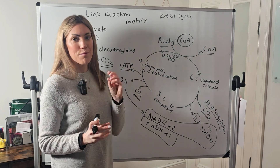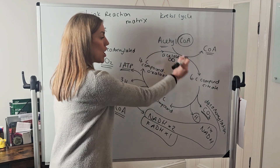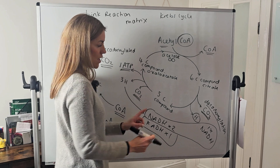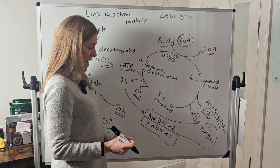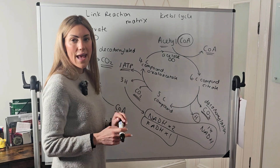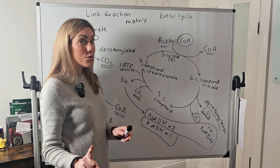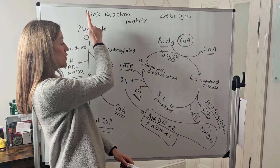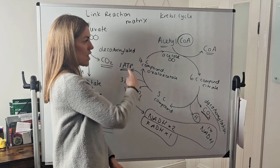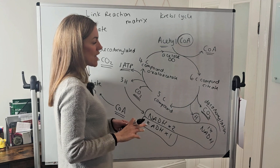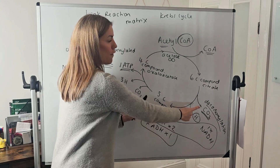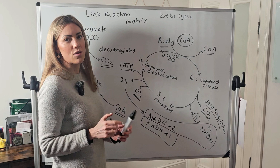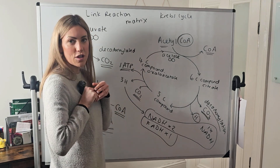Let's think about the products, because this is what's important. Per cycle you get two carbon dioxides, three NADH, one FADH, and one ATP. Per glucose you have to double it, because from glucose you make two pyruvates, two link reactions, and two acetyl CoAs — so two turns of the Krebs cycle. Per glucose: four carbon dioxide, six NADH, two FADH, and two molecules of ATP from substrate level phosphorylation.